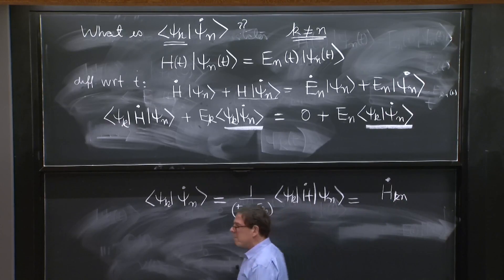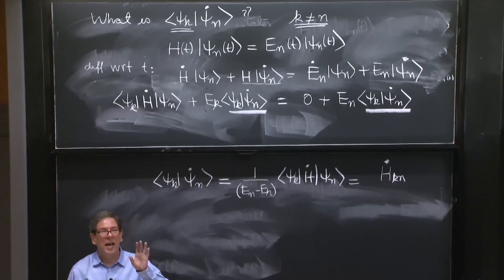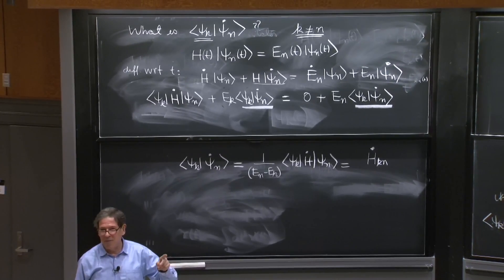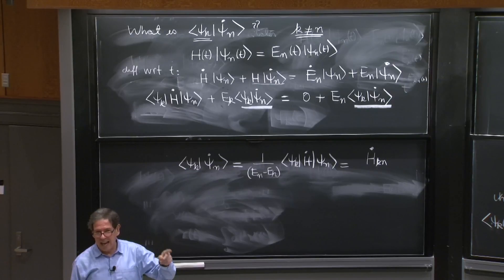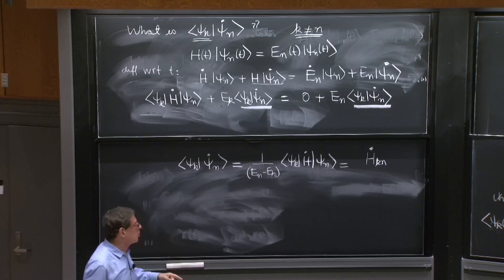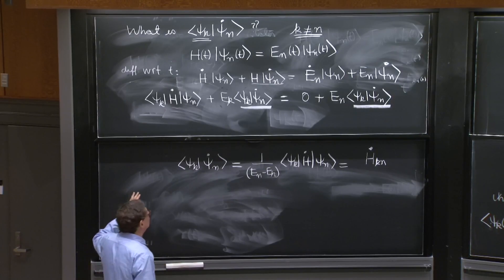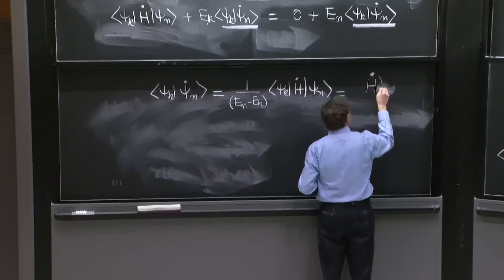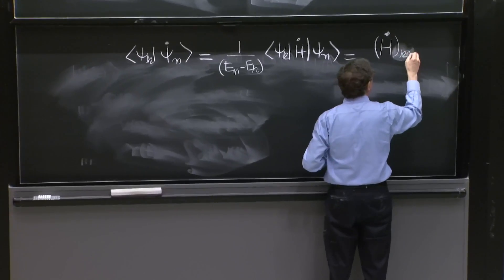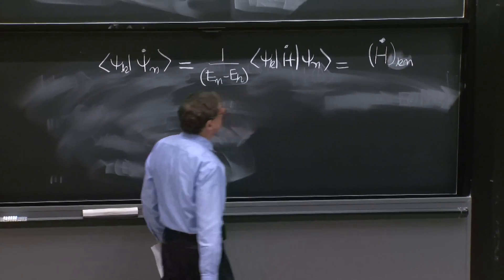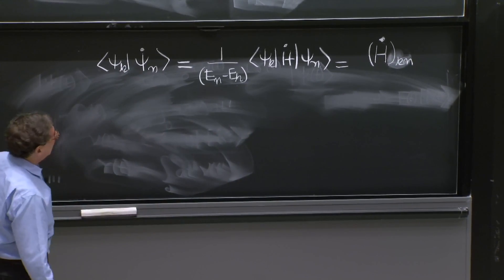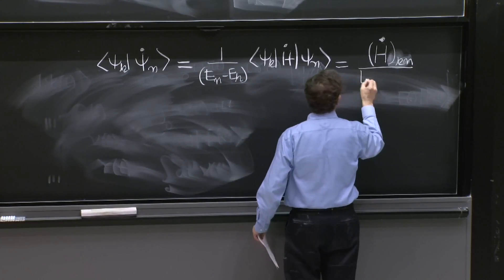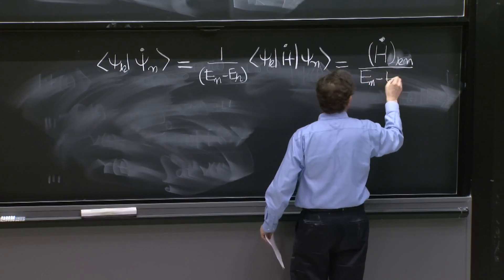The k n matrix element of h dot is not equal to the time derivative of the k n matrix element of h. You calculate h dot and you put the k n. If you wish, it really is this thing, the matrix element of h dot k n over e_n minus e_k.